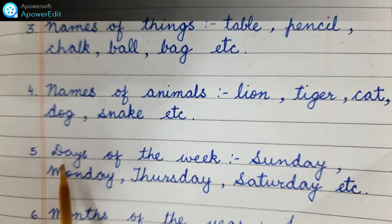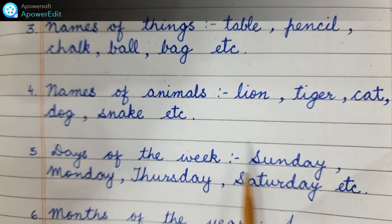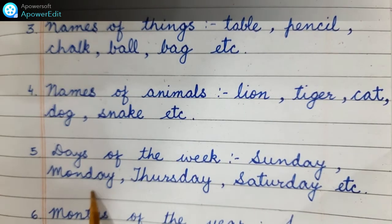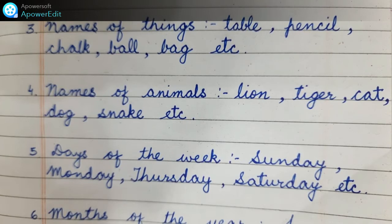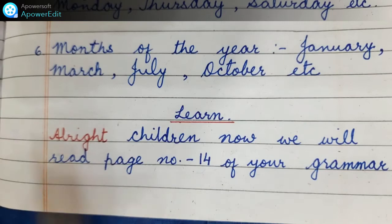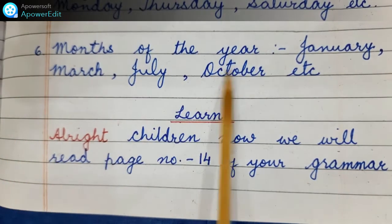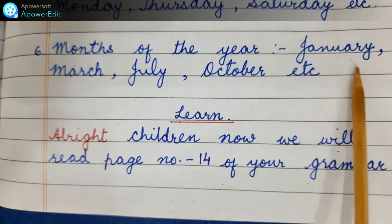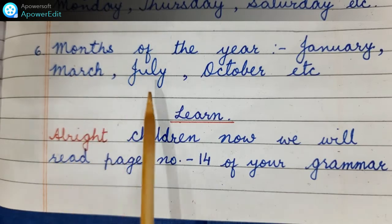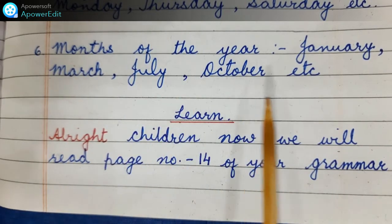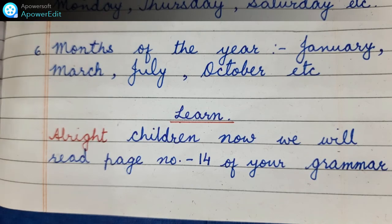Days of the week: Sunday, Monday, Thursday, Saturday, etc. These are all names of the week. Months of the year: January, March, July, October. These are all names of the months of the year.